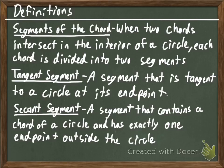Tangent segment. A segment that is tangent to a circle at its endpoint. A secant segment. A segment that contains a chord of a circle and has exactly one endpoint outside the chord.